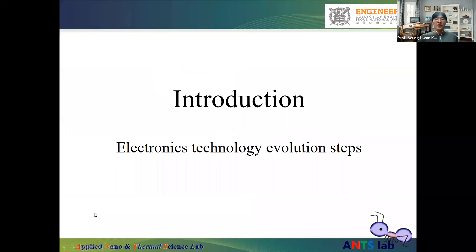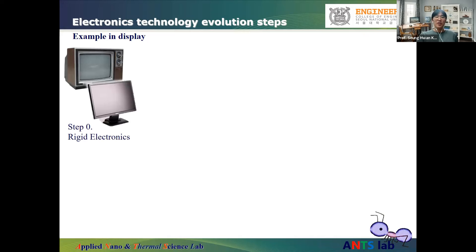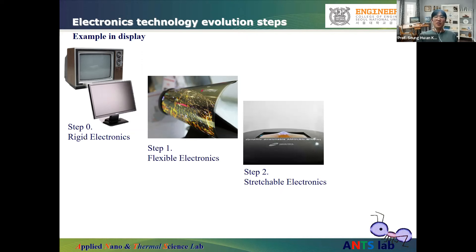He briefly introduces his personal perspective on how electronics technology will evolve. Using display as an example: the first generation was rigid and bulky, usually fixed on a shelf or wall. The second generation is flexible — we are currently in that transition from rigid to flexible display.